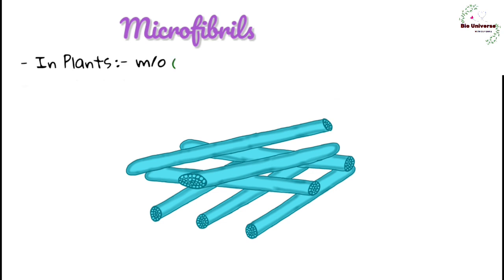In plants microfibrils are formed of cellulose, they are 10-25 nm in thickness and 0.5-7 micrometers in length. In fungi, microfibrils are made up of chitin. One microfibril is equal to 36-cellulose fiber.